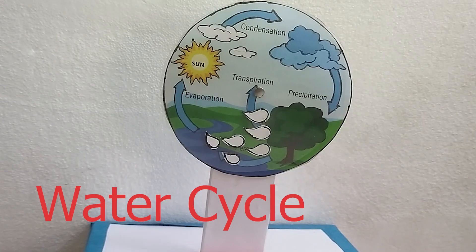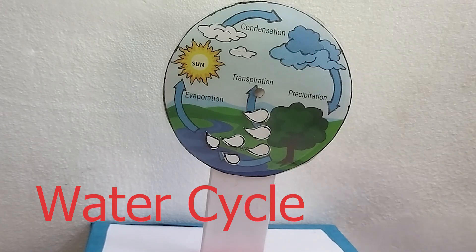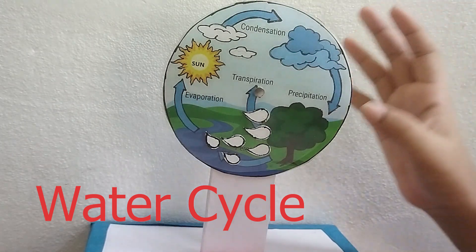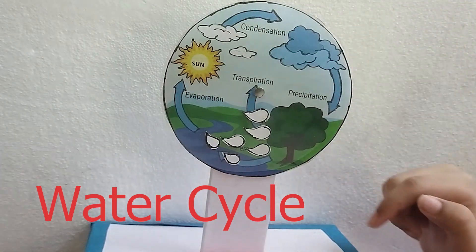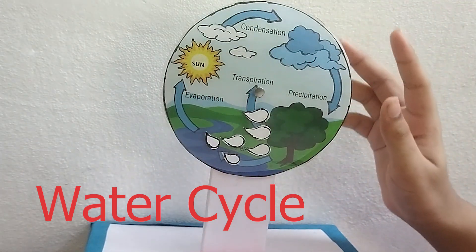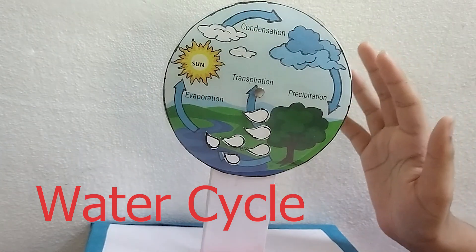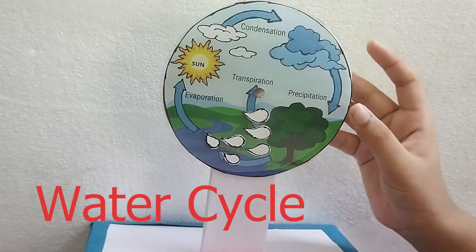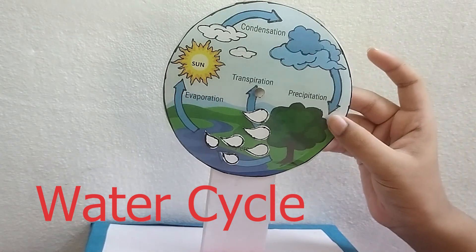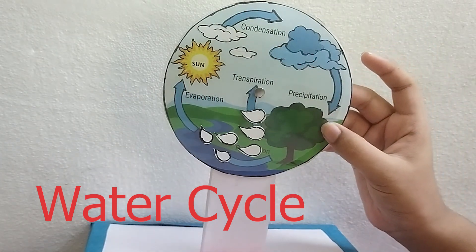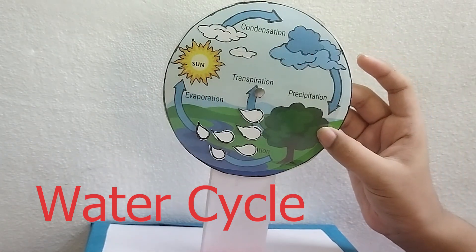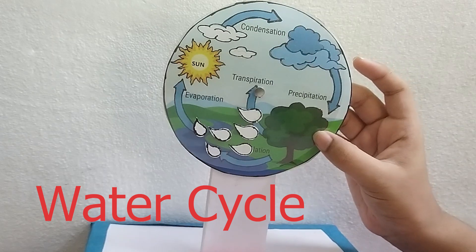Now that we've made the working model, let me show you how the water cycle actually works. We have rivers, and there is a water droplet. Rivers have water obviously — we all know that. And this water gets evaporated by the sun.